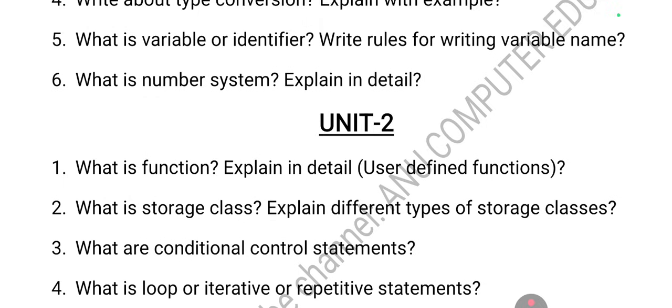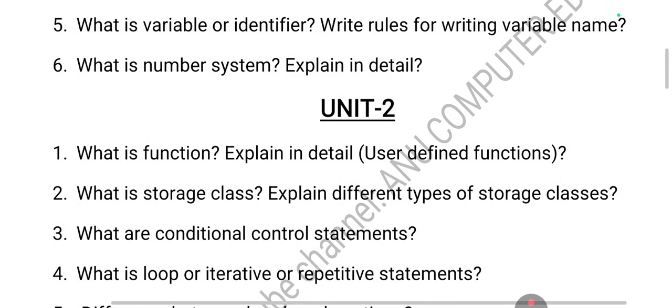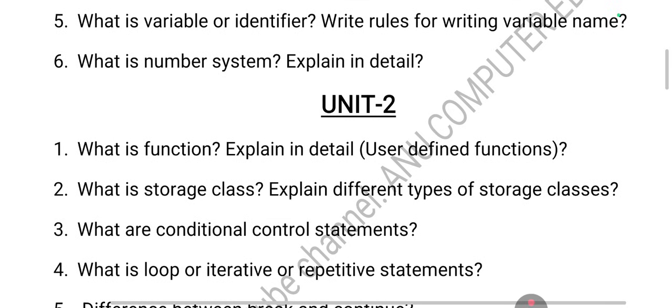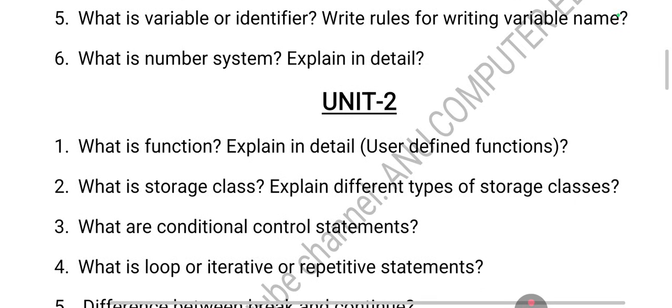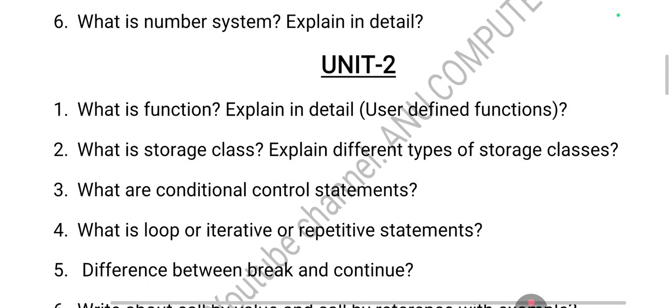Looping or iterative statements repeat the same statements until a specified condition is true. Types include for loop, while loop, and do-while loop. The key difference: while is an entry-controlled loop (condition checked first), while do-while is an exit-controlled loop (body executes at least once before checking condition). In while, the minimum executions can be zero; in do-while, at least one execution always occurs. Also, in do-while the while keyword appears at the end and requires a semicolon.